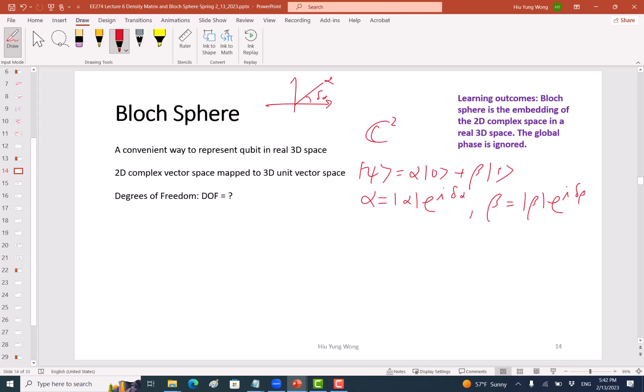So how many degrees of freedom do we have? In order to specify this vector, I need four real numbers, correct? I need alpha magnitude, delta alpha, beta magnitude, delta beta.